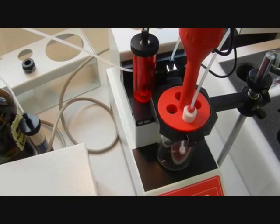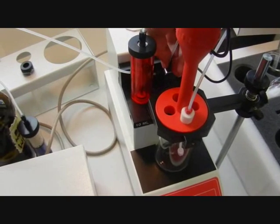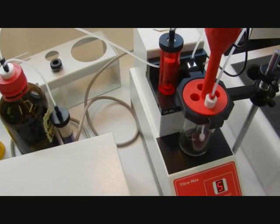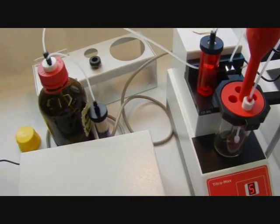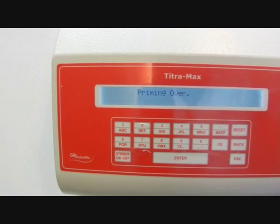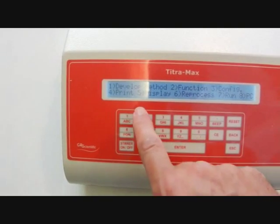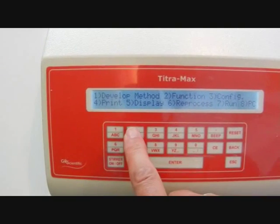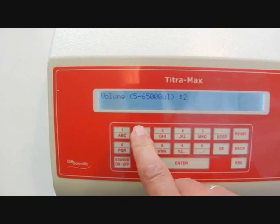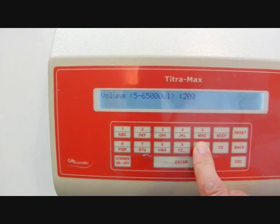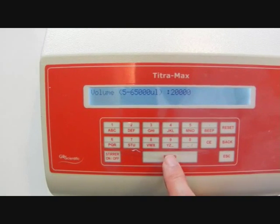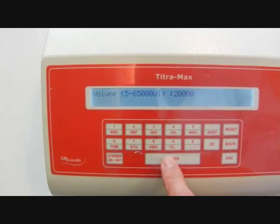Now whilst that's doing that, check all the tubes going in and out of the switching valve to make sure there are no leaks and also check the top of the burette. If you're happy that there are no leaks, the unit can be primed further just to make sure there are no air bubbles. Select 2 again function and then select 3 prime. This time we'll select 20,000 microliters to give 2 10ml flushes of the system. That should be enough to make sure there are no air bubbles.